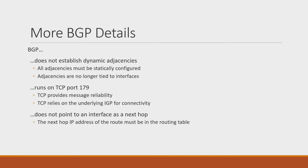Because BGP depends on an IGP for connectivity, it doesn't think in terms of interfaces, but in terms of addresses. One of the things each BGP route will have is a next hop. This next hop address must be in the routing table and reachable by a protocol that's not BGP. If this isn't the case, the BGP route won't be considered valid and won't be installed.